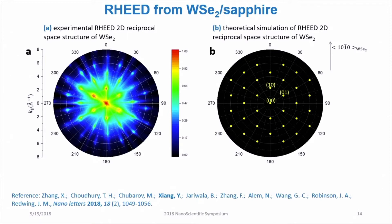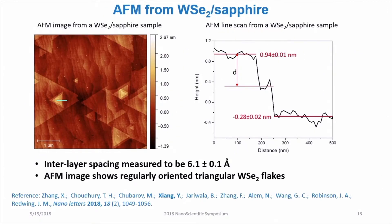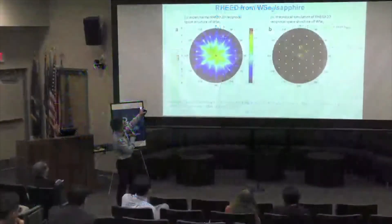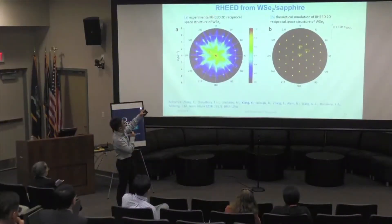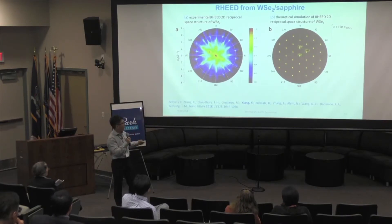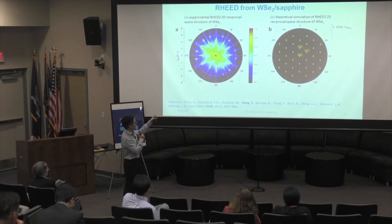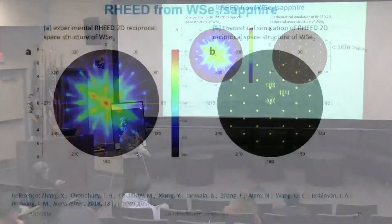Then we did the RHEED measurement for this same sample. Figure A shows the RHEED two-dimensional reciprocal space mapping for the tungsten diselenide sample on sapphire. We observed a sixfold symmetry.